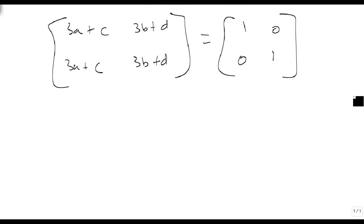Now we're going to use our matrix equality principle to say this has to equal this. So 3A plus C equals 1, and 3B plus D equals 0, 3A plus C equals 0, and 3B plus D equals 1.